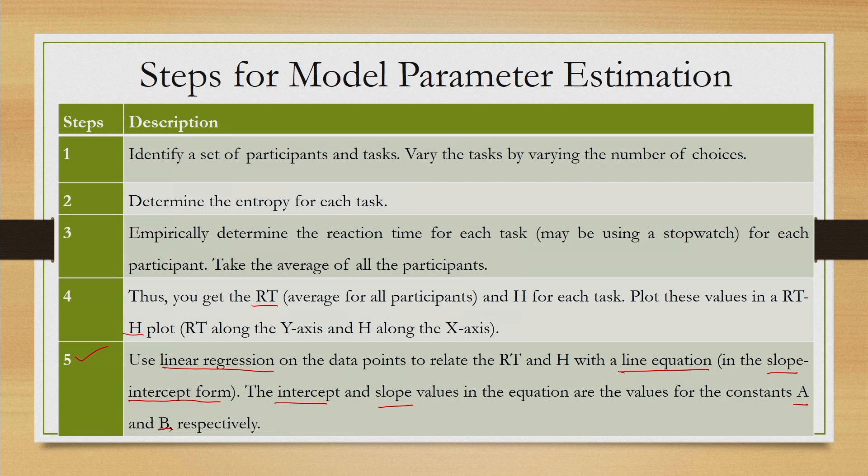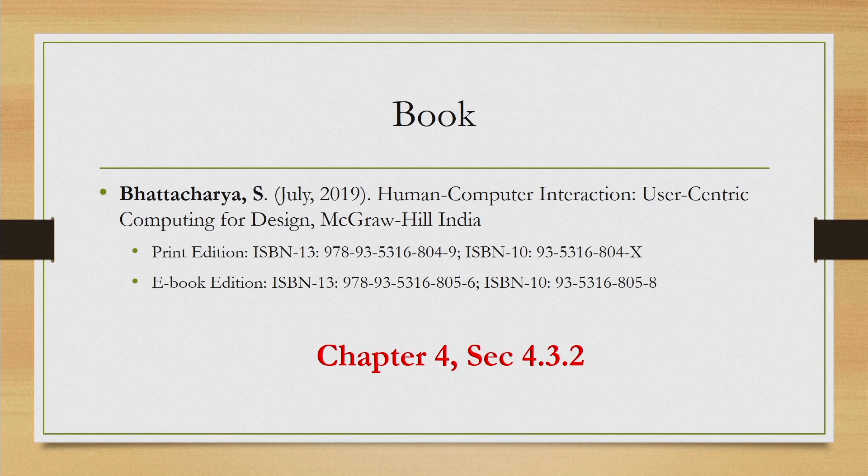If you calculate a and b empirically and use them in the equation, you will be able to predict the reaction time for any task that involves making a selection from a drop-down menu, which is the task domain here. All the materials discussed here are taken from the referenced book. Thank you and goodbye.